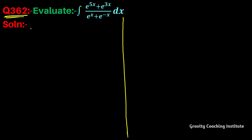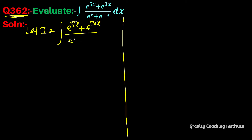Question number 362: evaluate the integration of (e^5x + e^3x) / (e^x + e^(-x)) dx. Let I equal to the integration of (e^5x + e^3x) / (e^x + e^(-x)) dx.